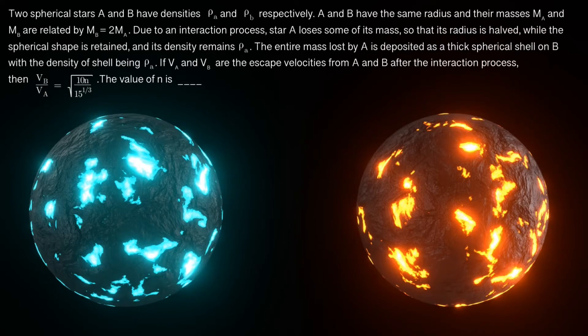Good morning dear students, today let us take a look at questions from JEE Advanced 2022. So let us start off with paper 1 question 1. Two spherical stars A and B have densities ρ_A and ρ_B respectively.